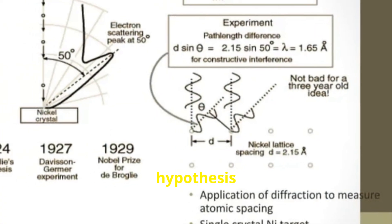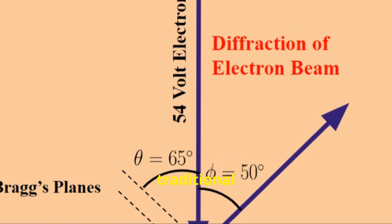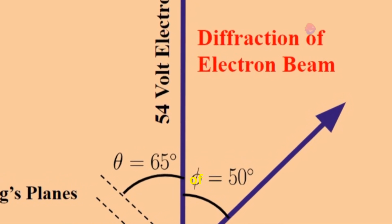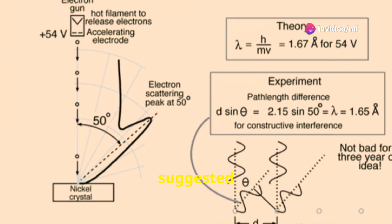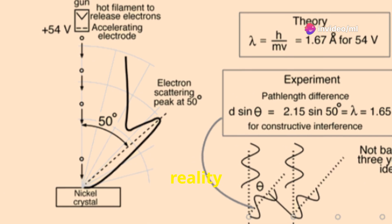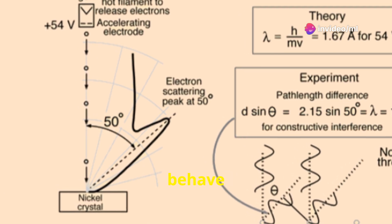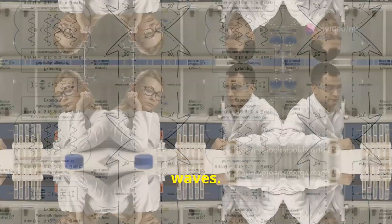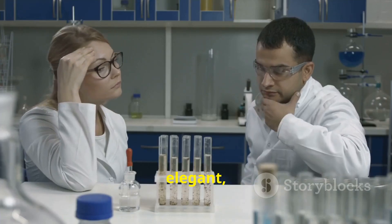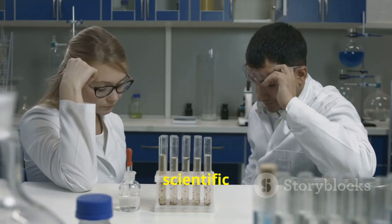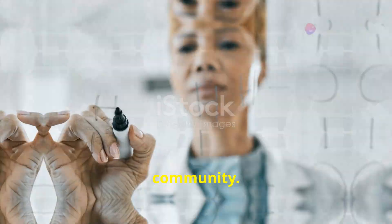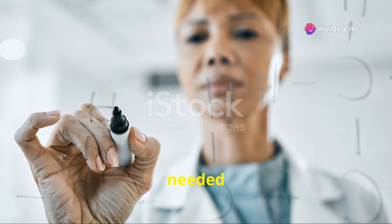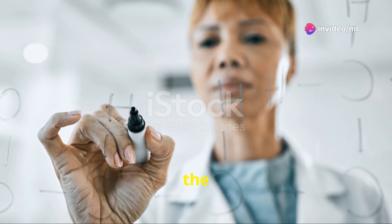De Broglie's hypothesis was revolutionary. It challenged the traditional view of matter as being composed of discrete particles and suggested a deeper, more fundamental reality where particles could also behave like waves. His idea, though elegant, was met with skepticism from the scientific community. Experimental verification was needed to solidify its place in the annals of physics.